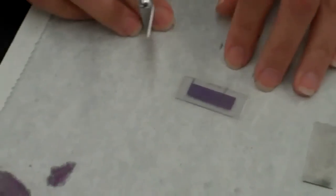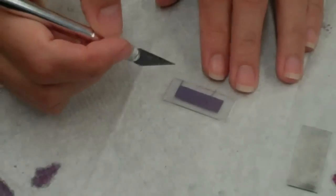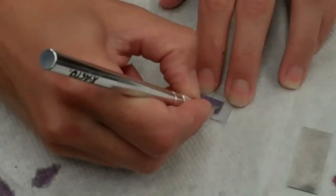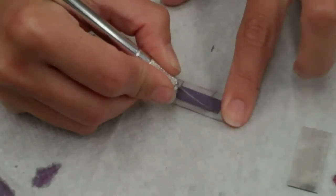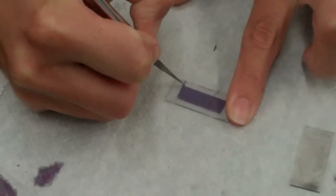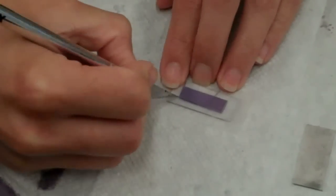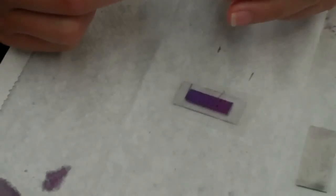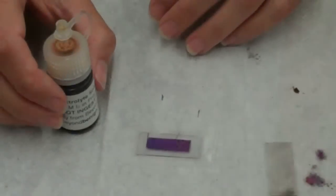you then will use an exacto knife, and the teacher should always do this part. Use the exacto knife to cut the area around where you've done the dyeing on the titanium dioxide piece. It's easiest if you hold the edge of the slide, and then cut around the rectangle area of the titanium dioxide. Once you remove that, then you are ready to apply the electrolyte solution.